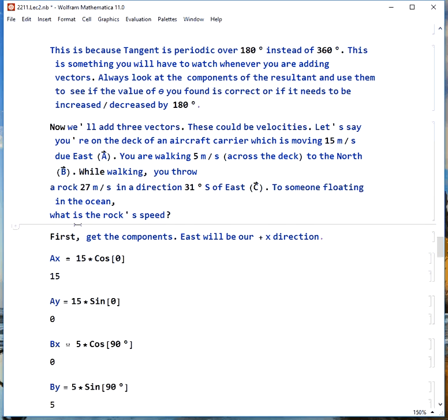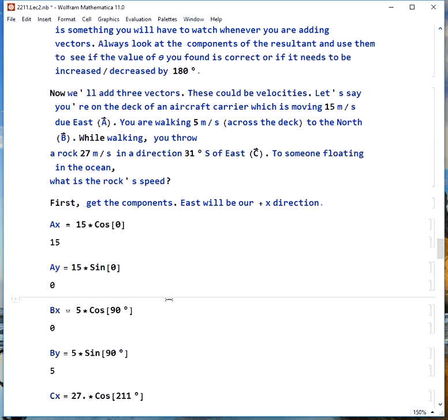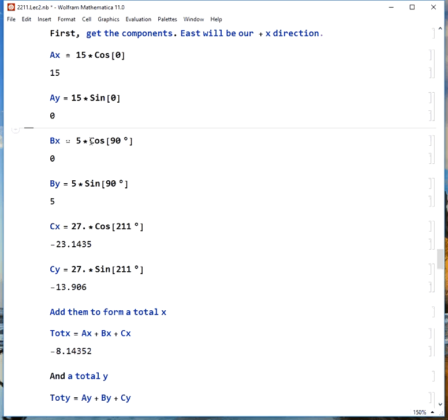But we have to add them in a particular way. We can't just add the numbers. We have to get the components because it doesn't make any sense to add things in the X direction to things in the Y direction. So the first step is always going to be get the components. East is our plus X direction. So the aircraft carrier's velocity is easy. 15 times cosine of zero is just 15. We have no Y value because 15 times sine of zero is zero. Your walking across the deck is also pretty easy because you're walking 90 degrees to our origin. So BX is 5 times cosine of 90. You have no X component to your velocity relative to the deck. You do have a Y component, 5 meters per second.